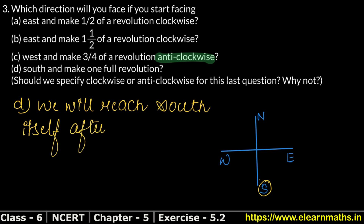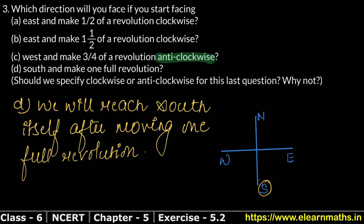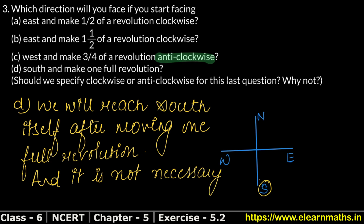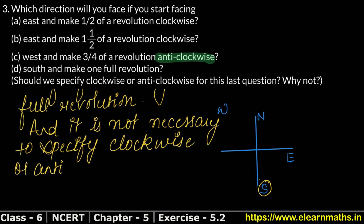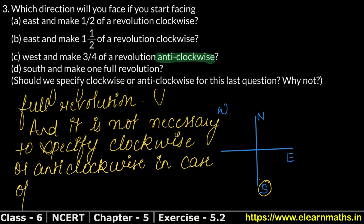After moving one full revolution, we will reach south — the same direction we started from. It is not necessary to specify clockwise or anti-clockwise in the case of a full revolution, because in a full revolution, wherever the person starts, they will reach the same place, whether going clockwise or anti-clockwise.